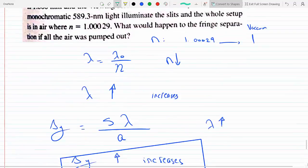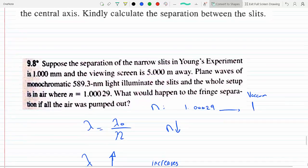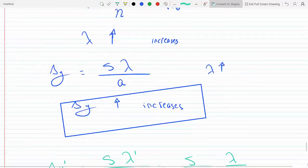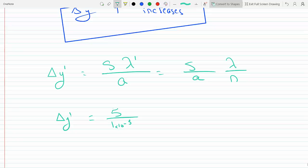...so five meters away. And the separation of the narrow slits is one millimeter, so that's 1 times 10 to the minus 3. So I'm finding delta y prime, the new separation.